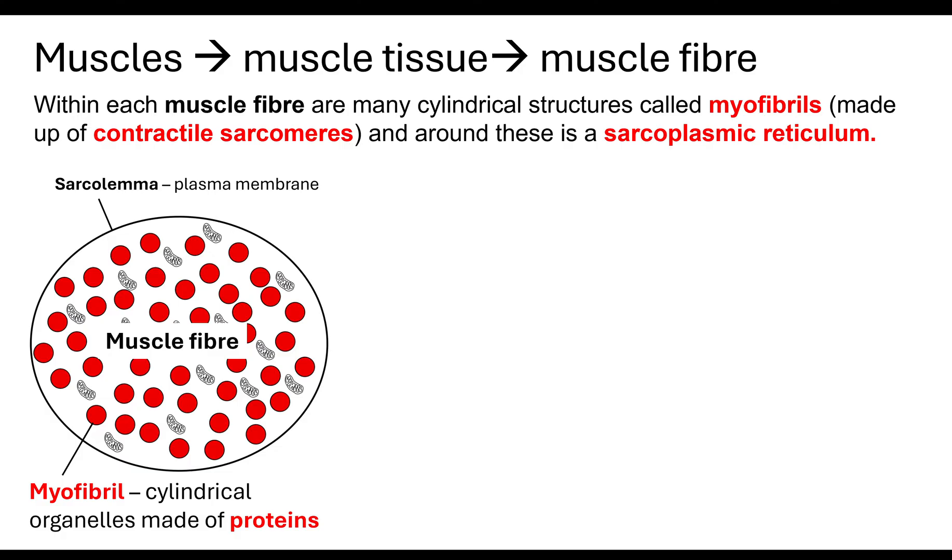Within each muscle fibre are many cylindrical structures called myofibrils. A myofibril is basically an organelle which is made up of proteins. Inside the myofibrils are what's known as contractile sarcomeres. They are what shorten so that the muscle can contract.